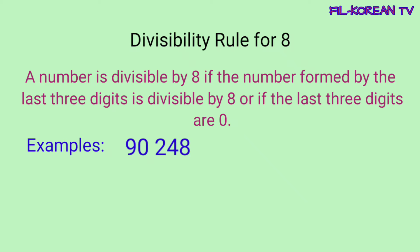90,248 — yung titignan natin yung 3 last digits. Ang number na nabuo ng tatlong numero sa hulihan ay 248. Ang 248 ay divisible by 8. So, yung given number na 90,248 ay divisible by 8.